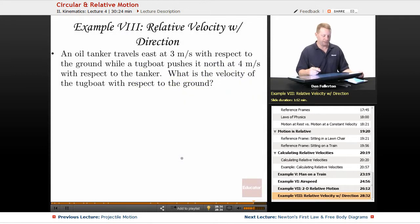This is a 2D problem with relative velocity. An oil tanker, call it T, travels east at 3 meters per second with respect to the ground, while a tugboat moves north at 4 meters per second with respect to the tanker. We'll call the tugboat B. What is the velocity of the tugboat with respect to the ground?